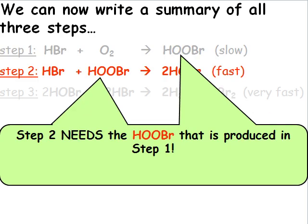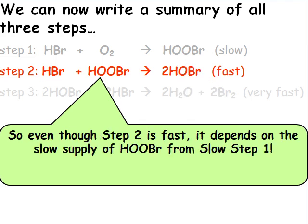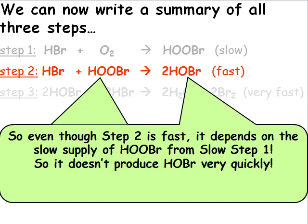Looking at step 2, we see that step 2 needs the HOBr made in step 1. So even though step 2 is fast, it depends on the slow supply of HOBr from the slow step 1. It can only produce HOBr as fast as it receives HOBr from step 1. So it doesn't produce HOBr very quickly.